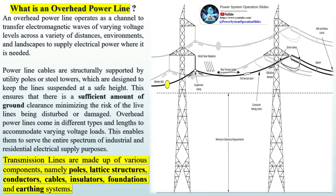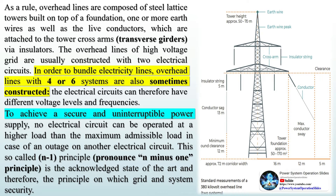An overhead power line operates as a channel to transfer electromagnetic waves of varying voltage levels across a variety of distances, environments, and landscapes to supply electrical power where it is needed. Power line cables are structurally supported by utility poles or steel towers, which are designed to keep the line suspended at a safe height. This ensures sufficient ground clearance, minimizing the risk of the live lines being disturbed or damaged. Overhead power lines come in different types and lengths to accommodate varying voltage loads, enabling them to serve the entire spectrum of industrial and residential electrical supply purposes.